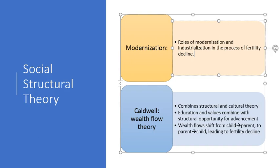Similarly, Caldwell offers his wealth flow theory, which is a combination of structural and cultural theory — perhaps more so than modernization — and incorporates values, looking at how education and values interact with structural opportunities in the economy in terms of advancement. Caldwell points out that there was a shift in the wealth flow pattern: in agricultural societies wealth flows from child to parent, whereas in industrial and post-industrial societies it flows from parent to child, and therefore there's an economic incentive to reduce fertility.